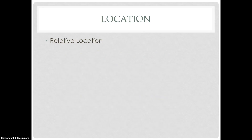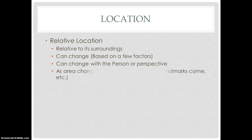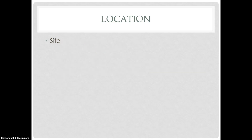Relative location, as you can guess, is relative to its surroundings. It can change based on a few factors, including the person or perspective. As an area changes — new roads, new landmarks — the relative location can change as well. It is not at all precise, while absolute location is spot-on and precise.